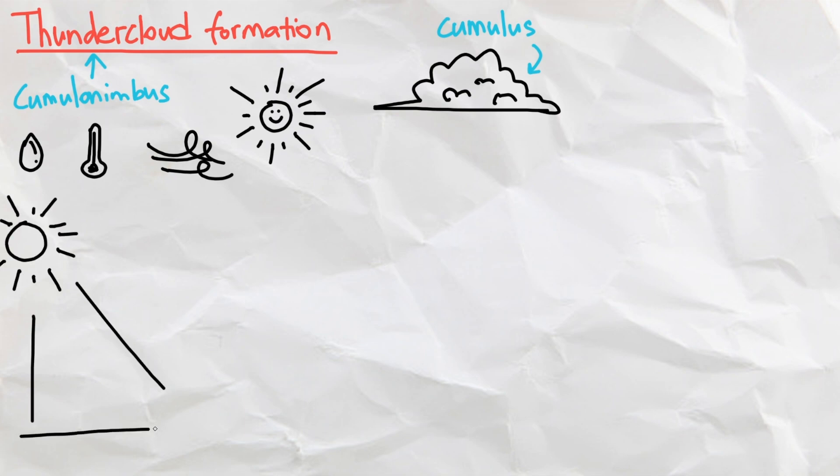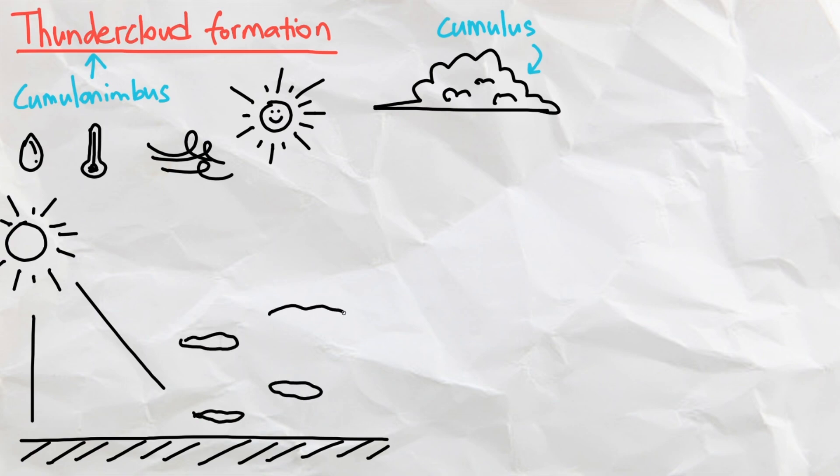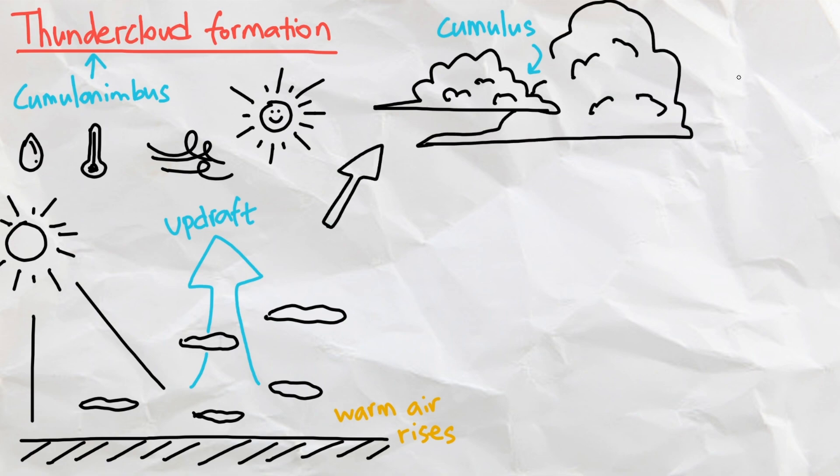As the sun heats up the moist air on the surface, the warmer air rises and starts to create an upward flow of air, or an updraft. As the air rises high enough, water vapors inside start to condense as it is colder the higher up we go, and form tiny water droplets or ice crystals.